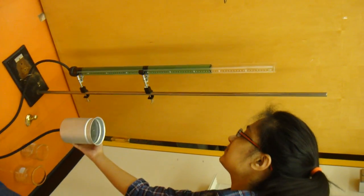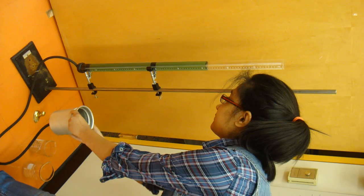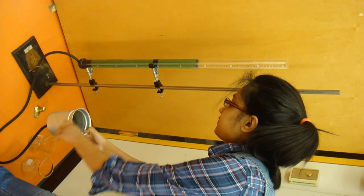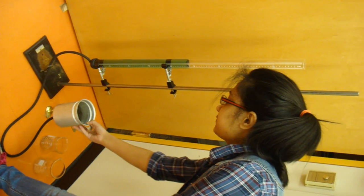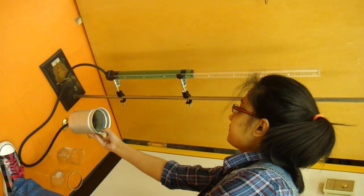Note how when she brings the pail down, the water level in the column also drops, thereby increasing the length of the air column.